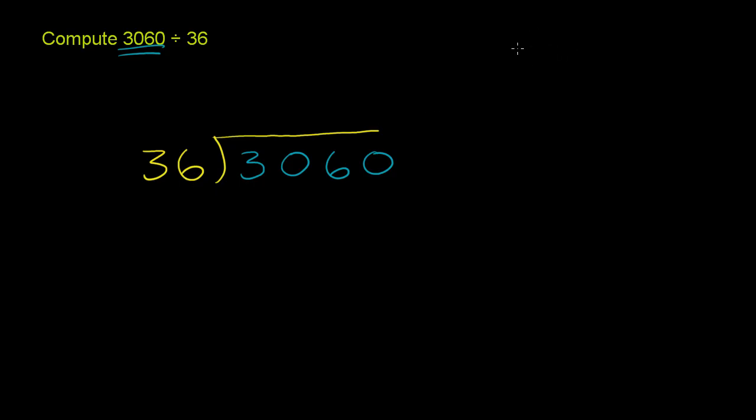And this is kind of the art of doing these problems when you're dividing a two-digit number into something. So 6 times 9 is 54. Regroup or carry the 5. 3 times 9 is 27 plus 5. 27 plus 5 is 32. So 36 times 9 is 324.